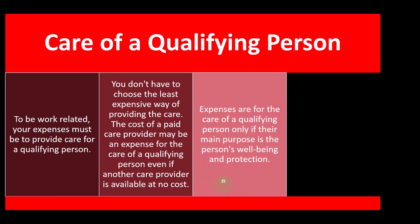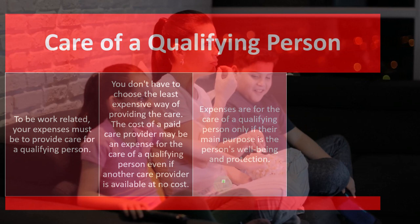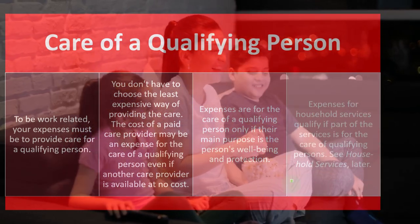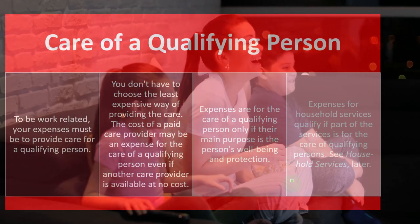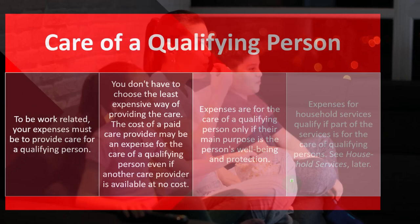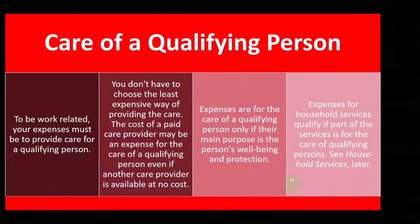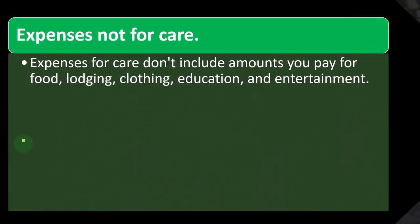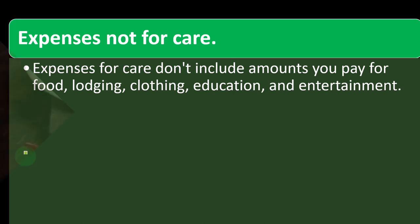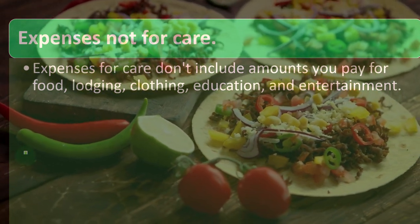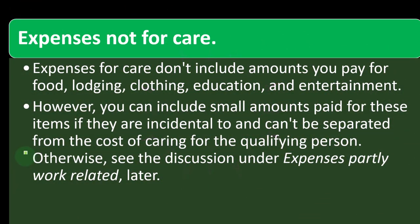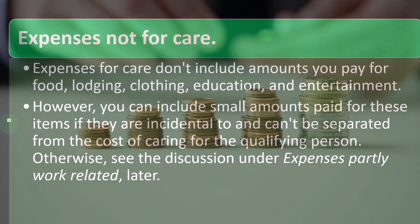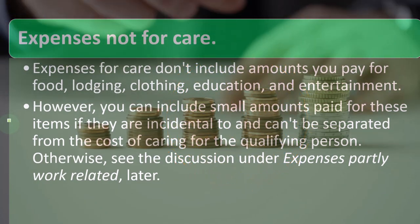To be work-related, your expenses must be to provide care for a qualifying person. You don't have to choose the least expensive way of providing the care — a paid care provider may qualify even if another provider is available at no cost. Expenses qualify only if their main purpose is the person's well-being and protection. Expenses for household services qualify if part of the services is for care of qualifying persons. Expenses for care don't include amounts paid for food, lodging, clothing, education, and entertainment, unless those items are incidental to and can't be separated from the cost of care.